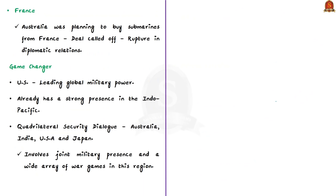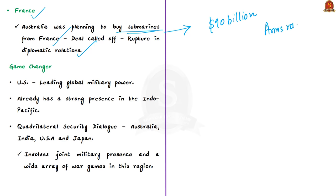Apart from China's concern, AUKUS is also leading to geopolitical tensions. A key example is the tension between France and AUKUS members. Before AUKUS, Australia was planning to buy submarines from France — a profitable deal worth $90 billion. After the announcement of AUKUS, this deal was called off, irritating France and creating a diplomatic rupture with Australia, UK, and USA. So the important issues around AUKUS are: first, it might lead to an arms race; and second, it gives rise to geopolitical tensions.